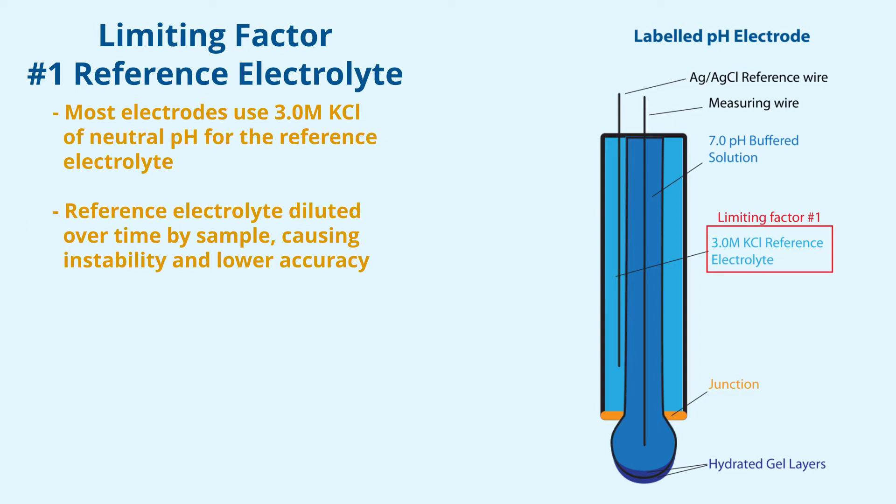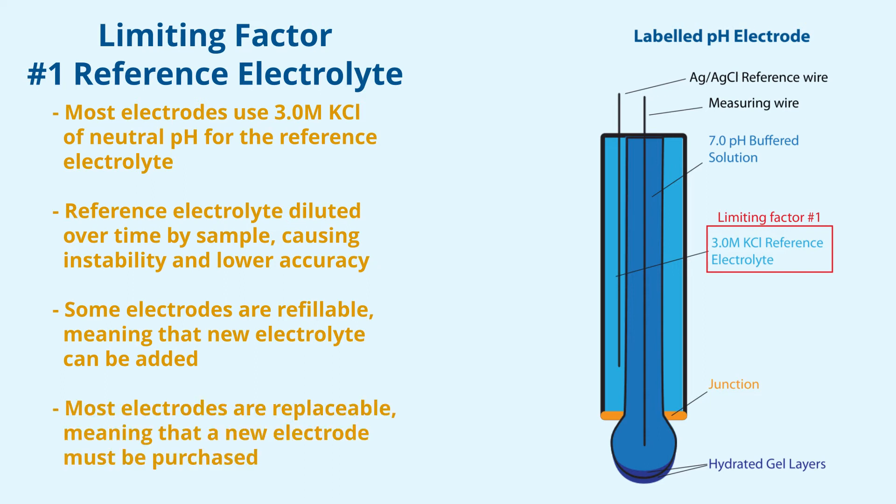Once dilution occurs, either new electrolyte must be added if the electrode is refillable, or the electrode must be replaced depending on the design of the sensor. Using the proper storage solution prevents this dilution so you get the most value out of your pH sensors in the long run.